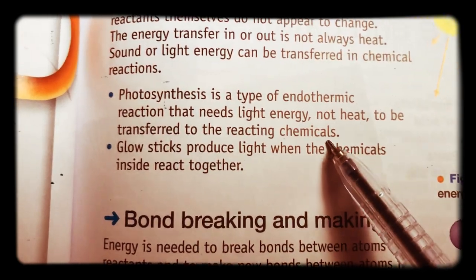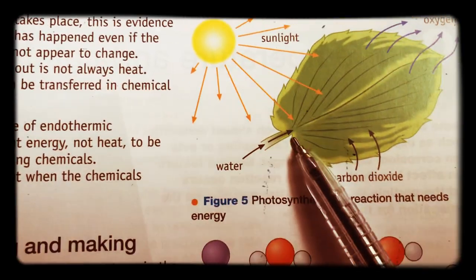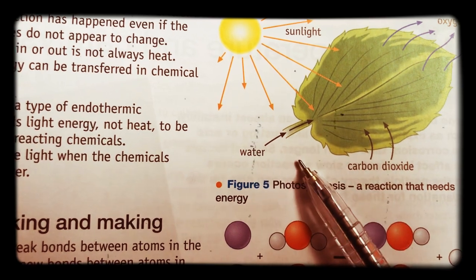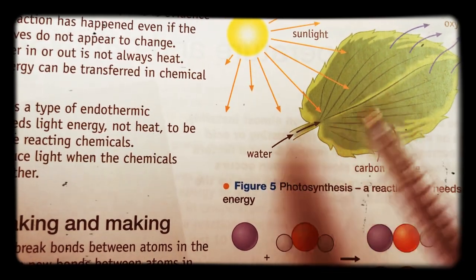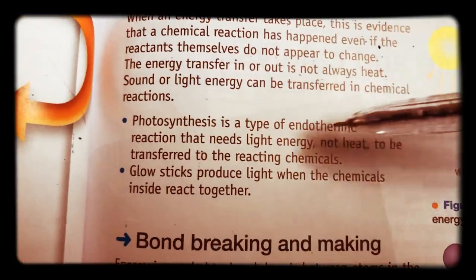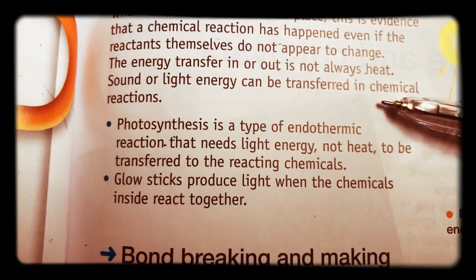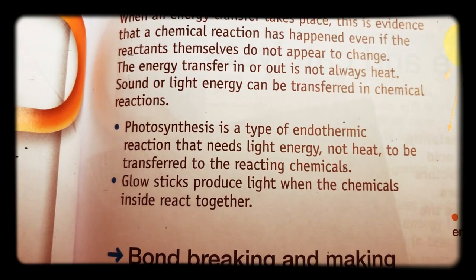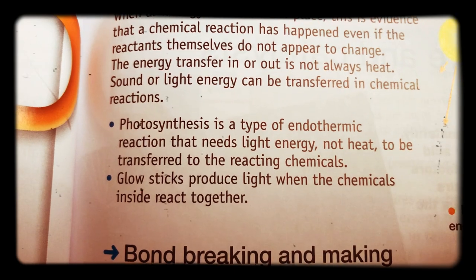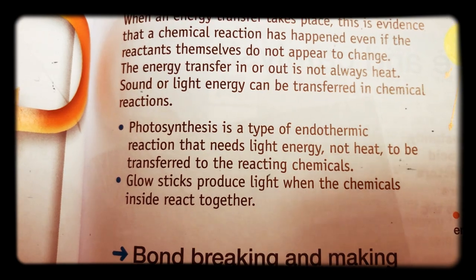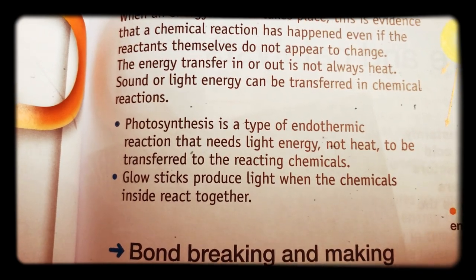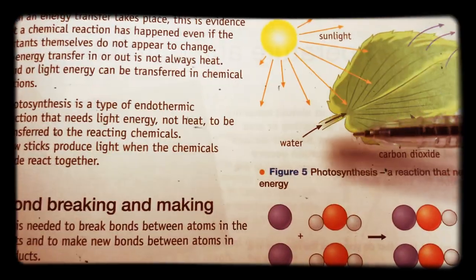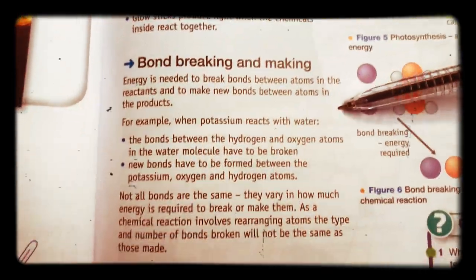Photosynthesis is an endothermic reaction — it requires certain types of light energy or heat to be transferred to the reacting chemicals. Plants will not grow on an extremely cold day because you need a little bit of warmth to make sure the water stays as water as it passes through the stems into the leaf. When an energy transfer takes place, this is usually evidence that a chemical reaction has happened, even if the reactants don't appear to change. A temperature change — whether upwards or downwards — tells us there is a chemical reaction. Energy transfer in and out is not always heat; we could also have the absorption of light or even sound being released.